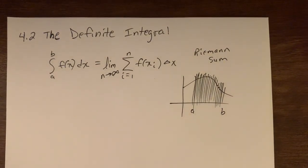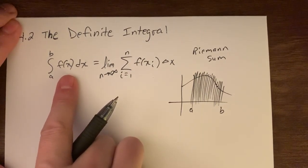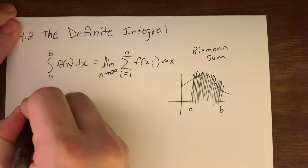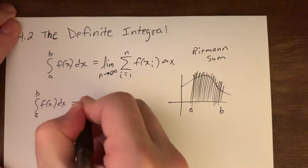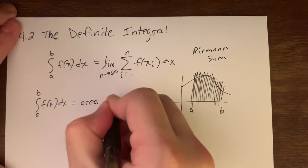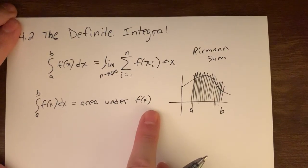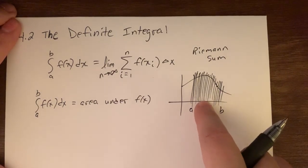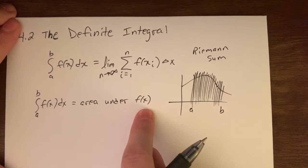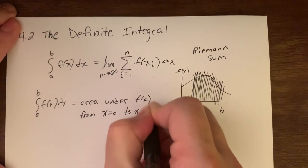Here's the biggest connection: the definite integral of f of x dx from a to b is equal to the area under the curve f of x. Remember, area 'under the curve' means from the curve to the x-axis. Even though we say 'under,' if the curve is below the x-axis, it would be the area up to the x-axis — specifically, the area under curve f of x from x equals a to x equals b.